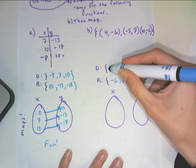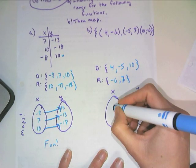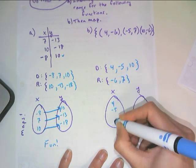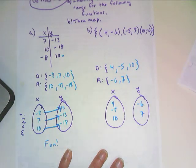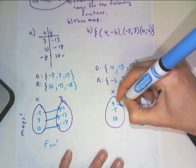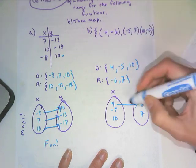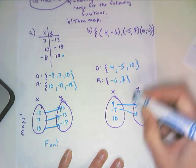So when we map it, our inputs are going in the first circle, so we have four, negative five, ten. We only have two outputs, which are negative six and seven. And when we map it, four goes to negative six, negative five goes to seven, ten goes to negative six.